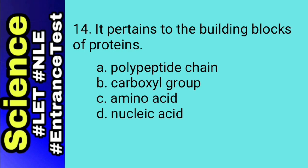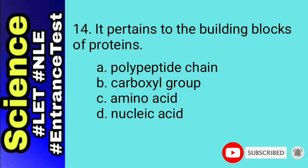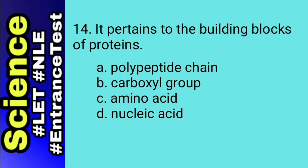For this number, let's do elimination. Starting from letter D, nucleic acid: nucleic acid is one of the macromolecules, but it is not part of protein, so eliminate D. We are left with choices A, B, and C, which pertain to parts of protein. Polypeptide chains are chains of amino acids bonded together. Carboxyl group is only part of amino acid. The answer is amino acid. Proteins are polymers of molecules called amino acids.